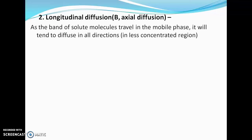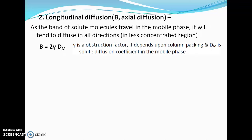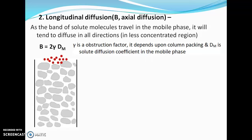The second term is longitudinal diffusion (B), also known as axial diffusion. As the band of solute molecules travels in the mobile phase, it tends to diffuse in all directions due to random molecular movement — solute molecules disperse from highly concentrated regions to less concentrated regions. It is calculated by: B = 2γDm, where γ is the obstruction factor (depending on column packing uniformity) and Dm is the solute diffusion coefficient in the mobile phase.